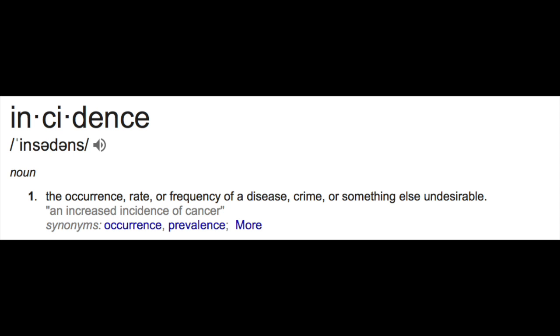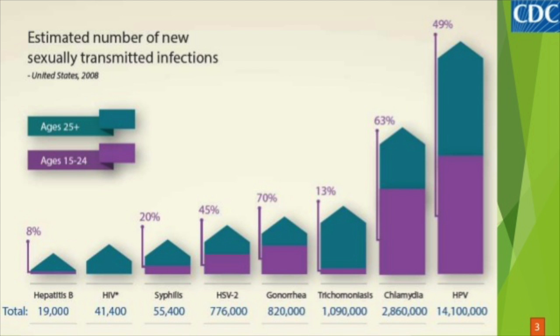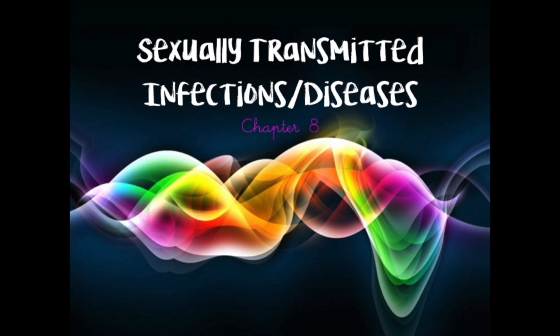Whereas incidence is just the new cases of a disease in a certain time frame in a certain population. For example, how many people got diagnosed with HIV in 2017 in the United States would be the incidence — it wouldn't include people who already had HIV, perhaps acquired in the 80s or 90s. Those are the key terms you'll need for this chapter.